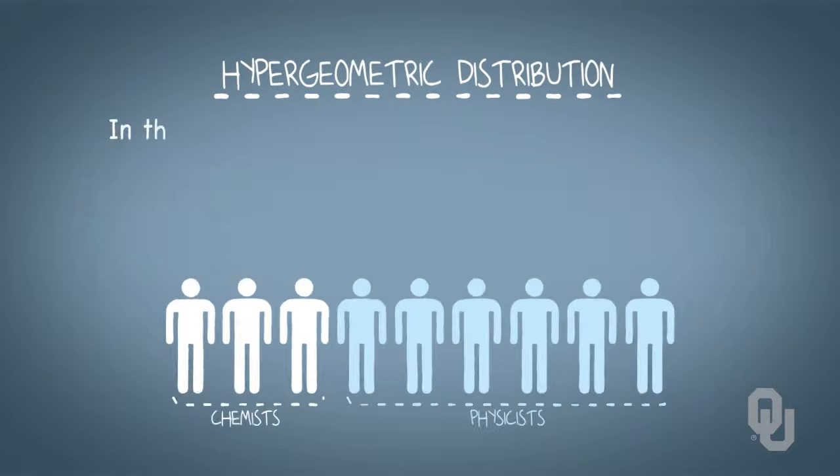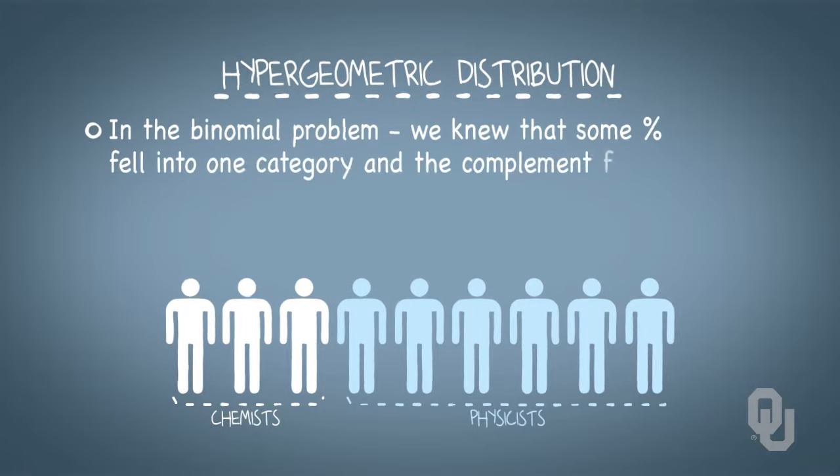In the binomial problem, we knew that some percentage generally fell into one category, therefore the complement fell into the other category. But here we know exactly how many are in each category in this finite population.